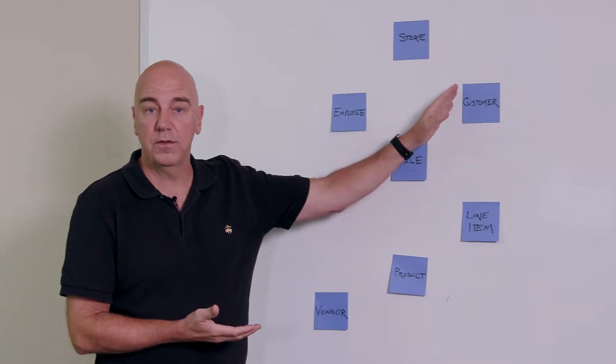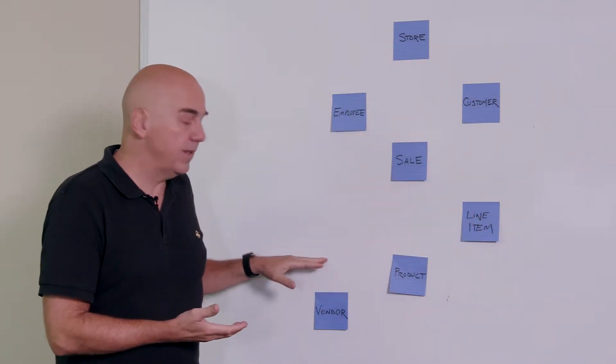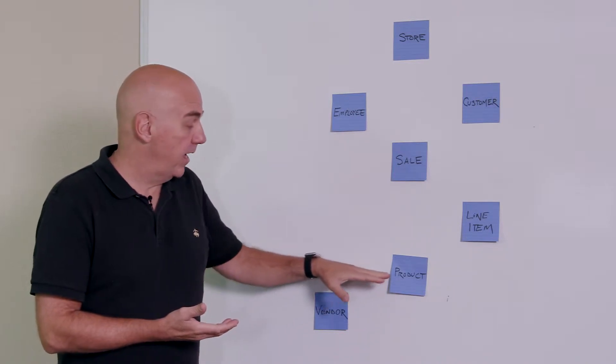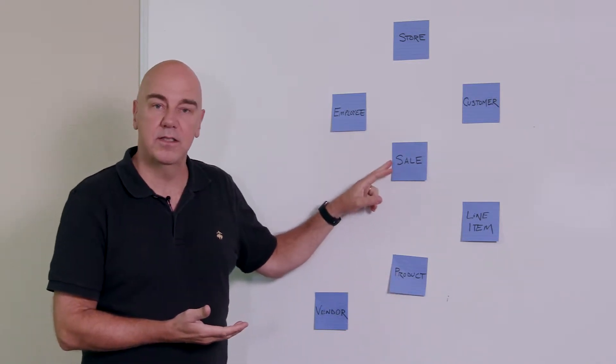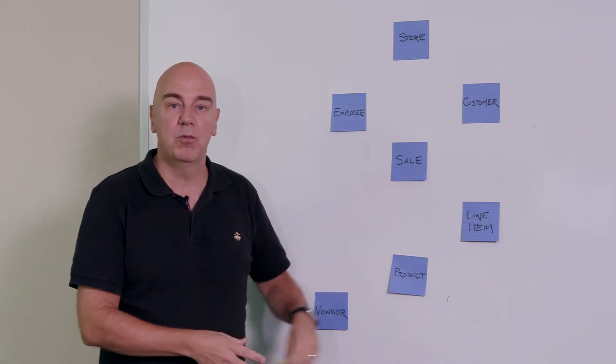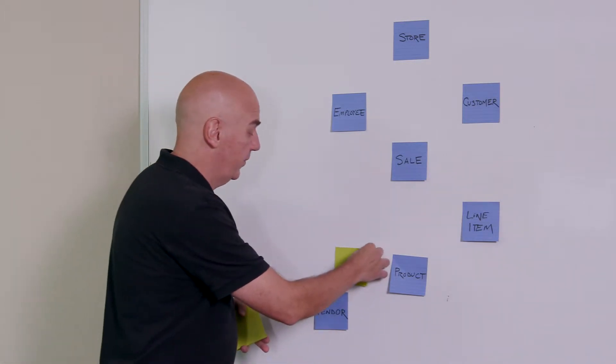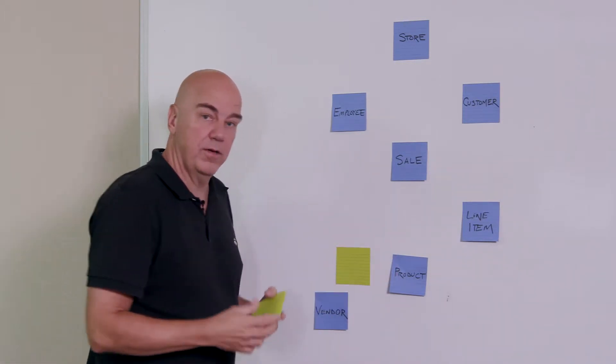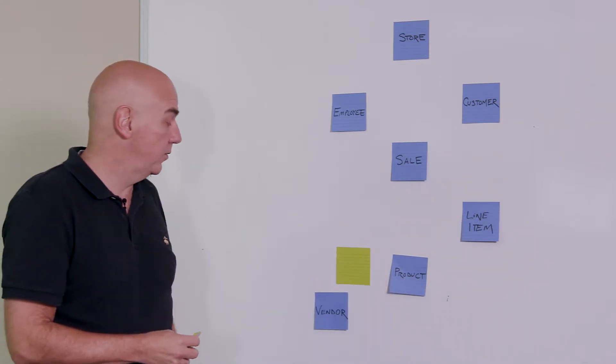It's the employee, the store, the customer, line item, product, everything. Perhaps not the vendor. In other words, how this product is assigned to its vendor really doesn't have much of anything to do with the sale. So that's probably one piece that we can say doesn't really necessarily belong as part of the sale relationship. It's its own relationship, products to vendor.